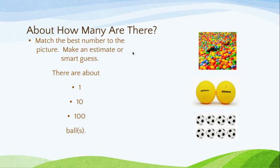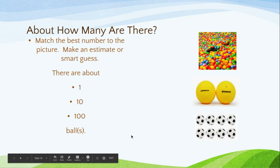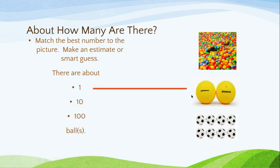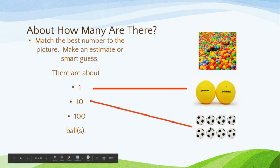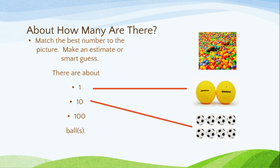Now we're going to match the best number to the picture and make an estimate or smart guess. We're going to think: there are about 1, 10, and 100 balls — let's see how we can match these numbers up. I can clearly match the number 1 with this set of balls over here. Even though I can see 2, that's definitely closest to 1, so that is the most reasonable estimate. The soccer balls are clearly the best match for 10. And then we're left with 100 — the larger you get, the harder it is to count, but 100 balls definitely makes the most sense for the remaining picture.